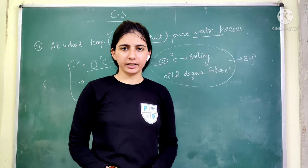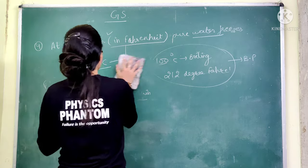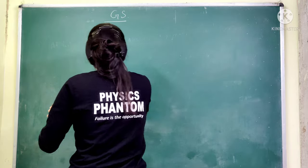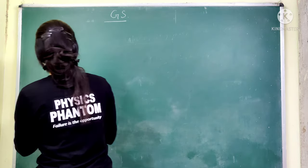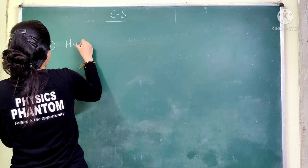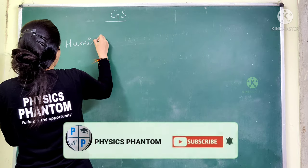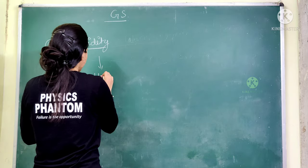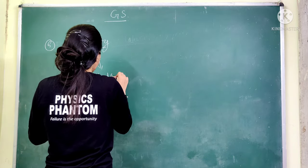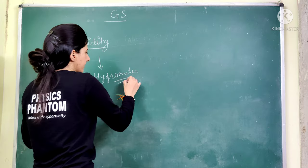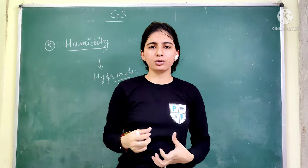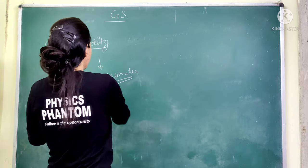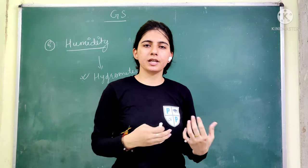The next question is about a device related to humidity. What is the name of the device that measures humidity? The answer is a Hydrometer. A hydrometer is a device that measures water vapors in the air or in the soil. These were some important questions from previous year papers.